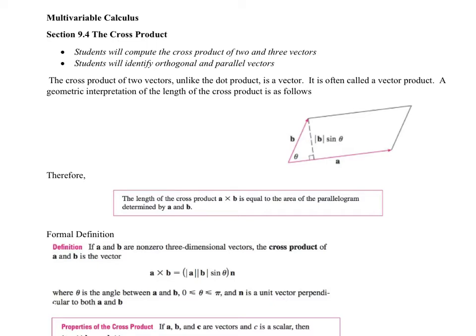To start, I'm going to try to explain the cross product geometrically — not in component form, but in the context of what object the vectors create. As you can see in our picture in the notes, we have vector B and vector A. If you were to project B over to one side and A over to the other, you end up forming a parallelogram. The first thing we're going to look at with the cross product is the area of this parallelogram formed on a plane using these two vectors.